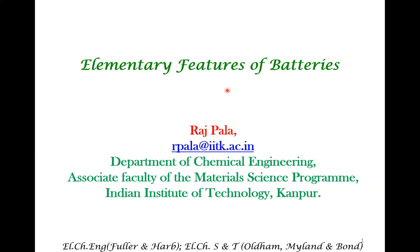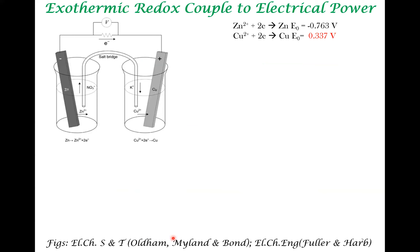Welcome to this lecture on elementary features of batteries. Much of the material is from two textbooks. If you look at a battery, the primary physico-chemical requirements are rather simple. A battery consists of an exothermic redox couple which, when reacted, gives rise to electrical power. Redox means there is a reduction component and an oxidation component — a pair of reactions involving electron transfer.